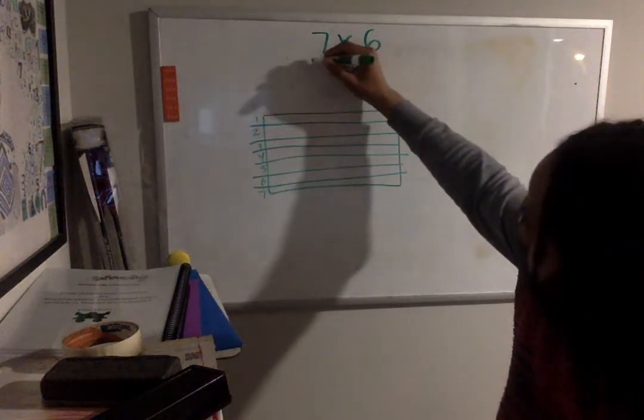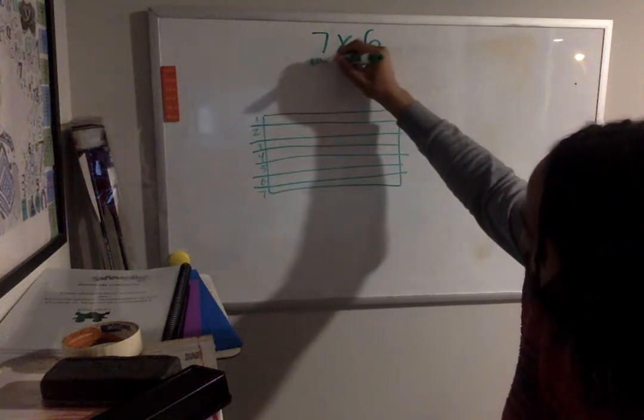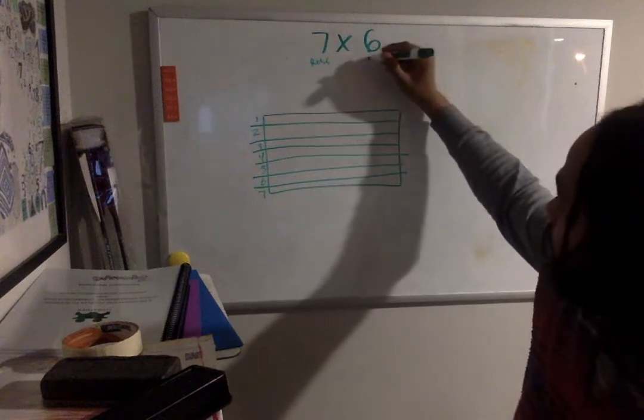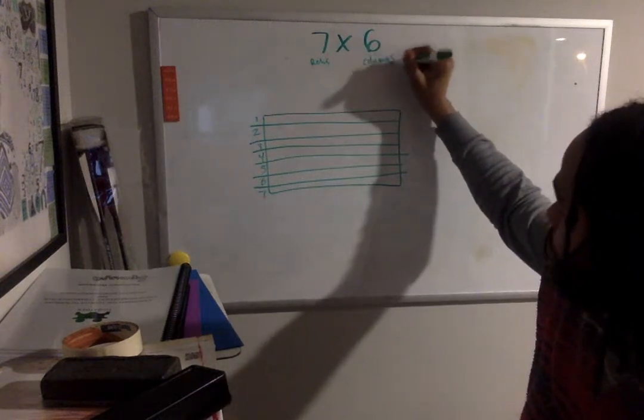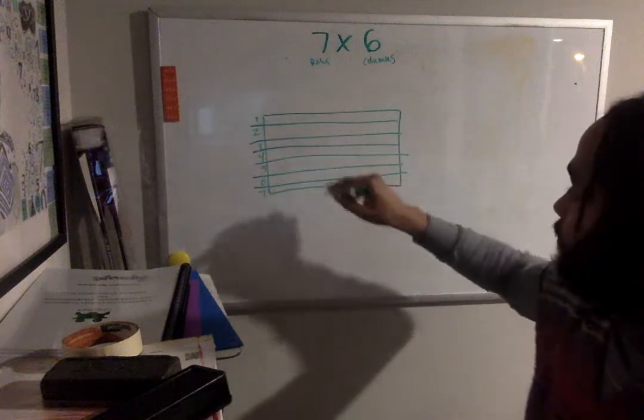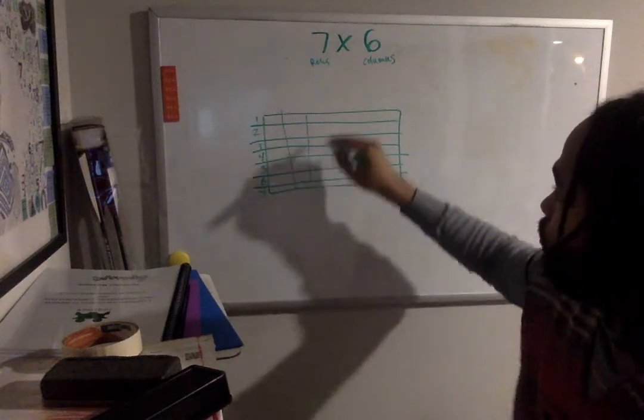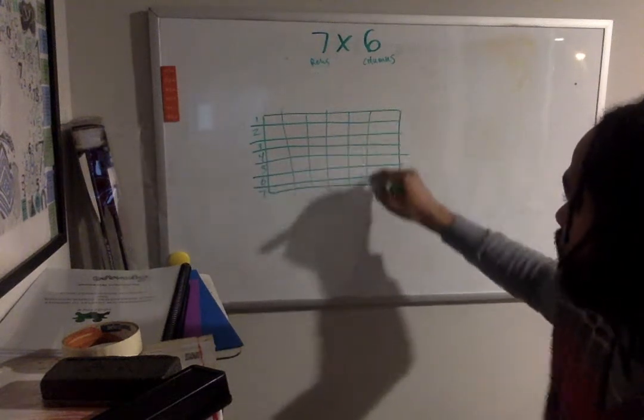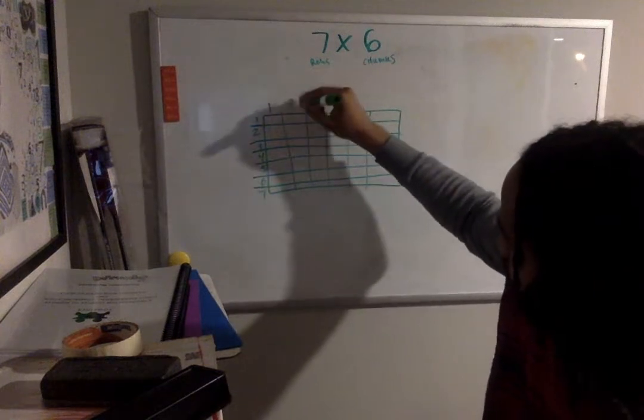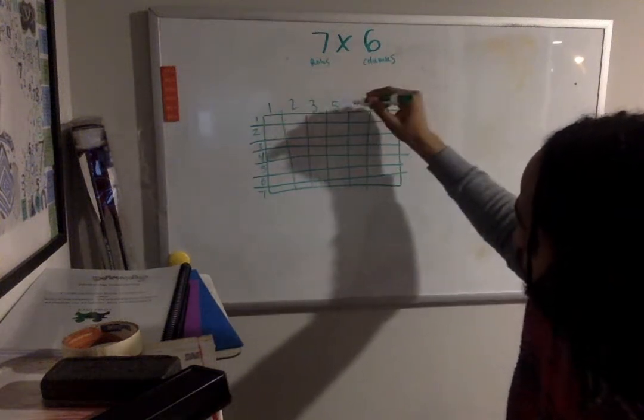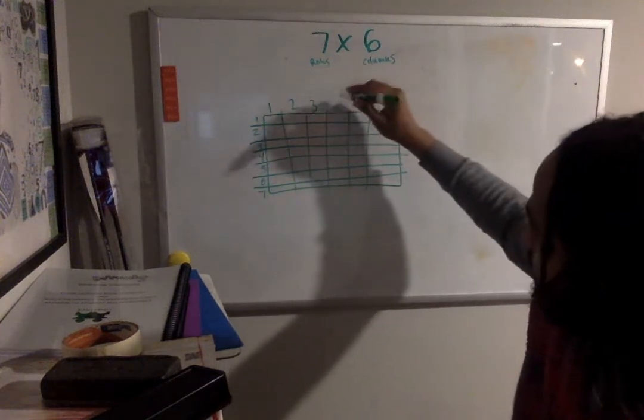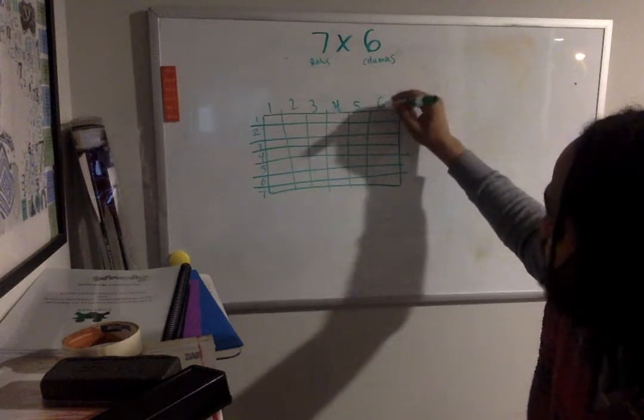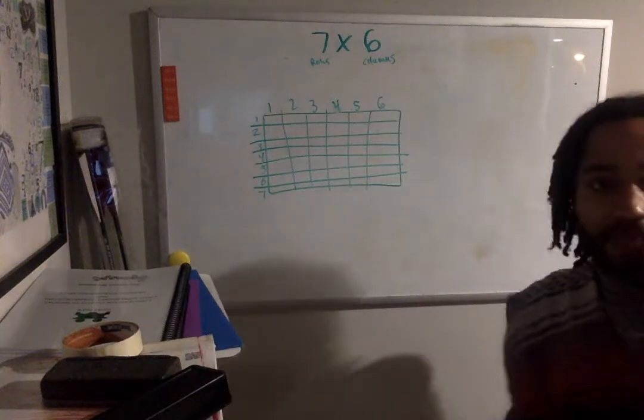Now I need my six columns. Six columns. All right. So my columns go up and down. One, two, three, four, five, six. All right. So I have seven times six.